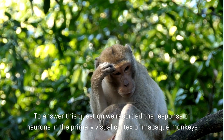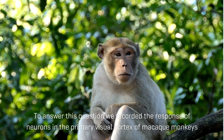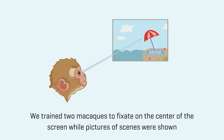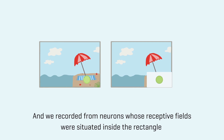we recorded the response of neurons in the primary visual cortex of macaque monkeys. We trained two macaques to fixate on the centre of a screen while pictures of scenes were shown. Half of the scenes had a portion of the image occluded by a white rectangle, and we recorded from neurons whose receptive fields were situated inside the rectangle.